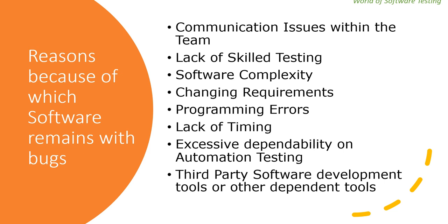The last reason is third-party software development tools or other dependent tools. Third-party tools such as debuggers, HTML editors, add-ons, plugins, map navigation APIs, shopping cart plugins, etc. are often needed during software development but may have bugs in them that pass on to your software. Whatever bugs are already present in third-party software get passed on to your software. Continuously changing tools and keeping pace with different versions and their compatibility is a major ongoing issue. These are the eight reasons because of which software remains with bugs.